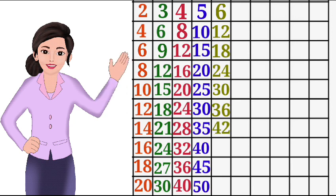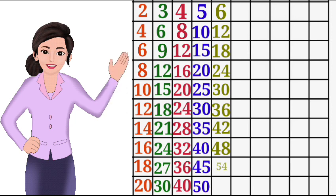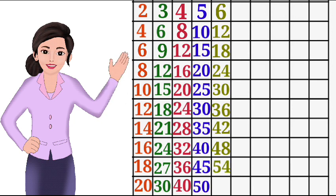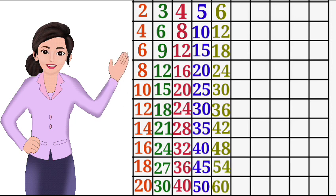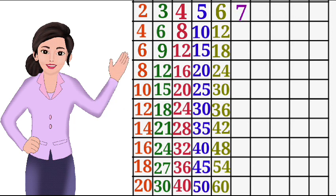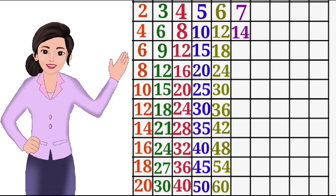6-8 the 48, 6-9 the 54, 6-10 the 60. 7-1 the 7, 7-2 the 14. 7 3s are 21.